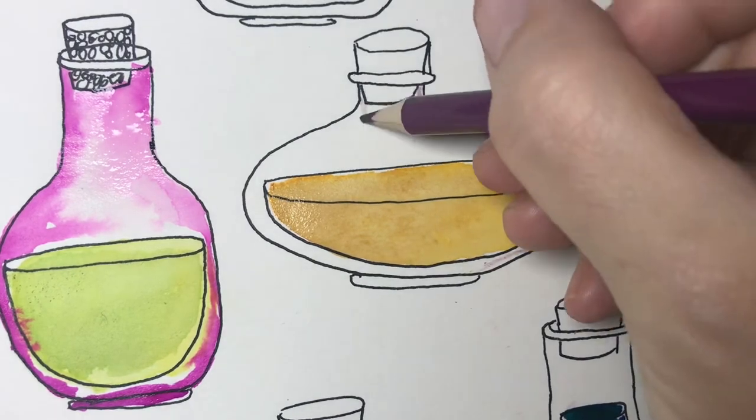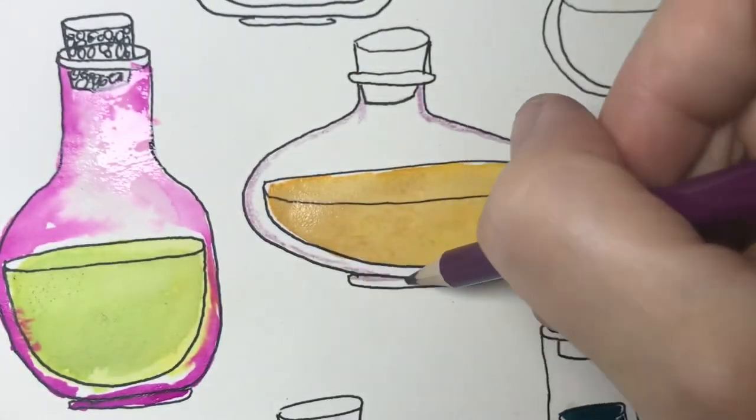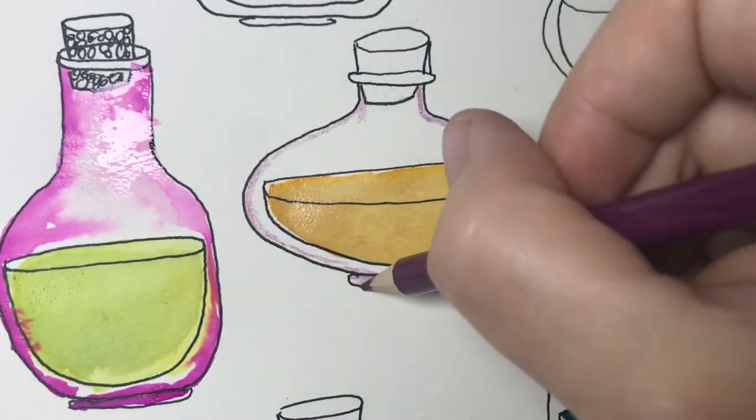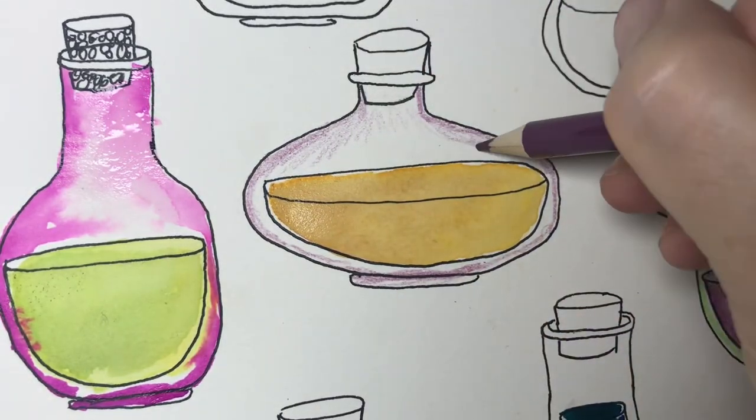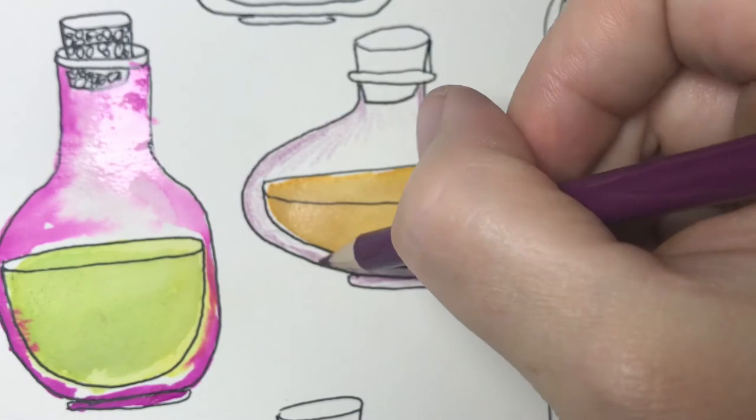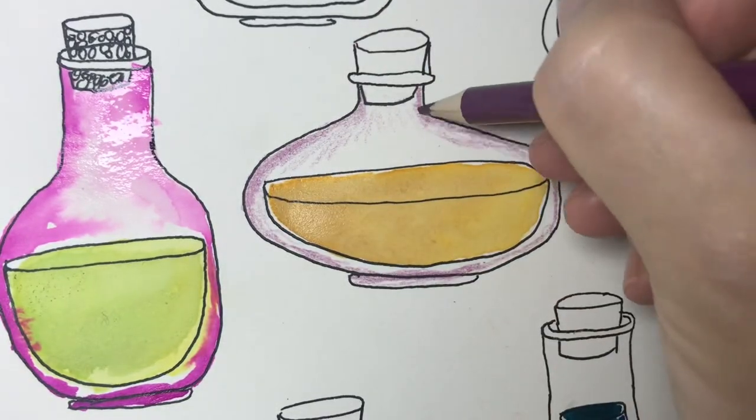I'm going to use a darker color around the outside right near the line and then I'm going to go lighter and lighter with my pressure so that the glass gets more transparent towards the middle. This starts to make my bottle form look rounder.